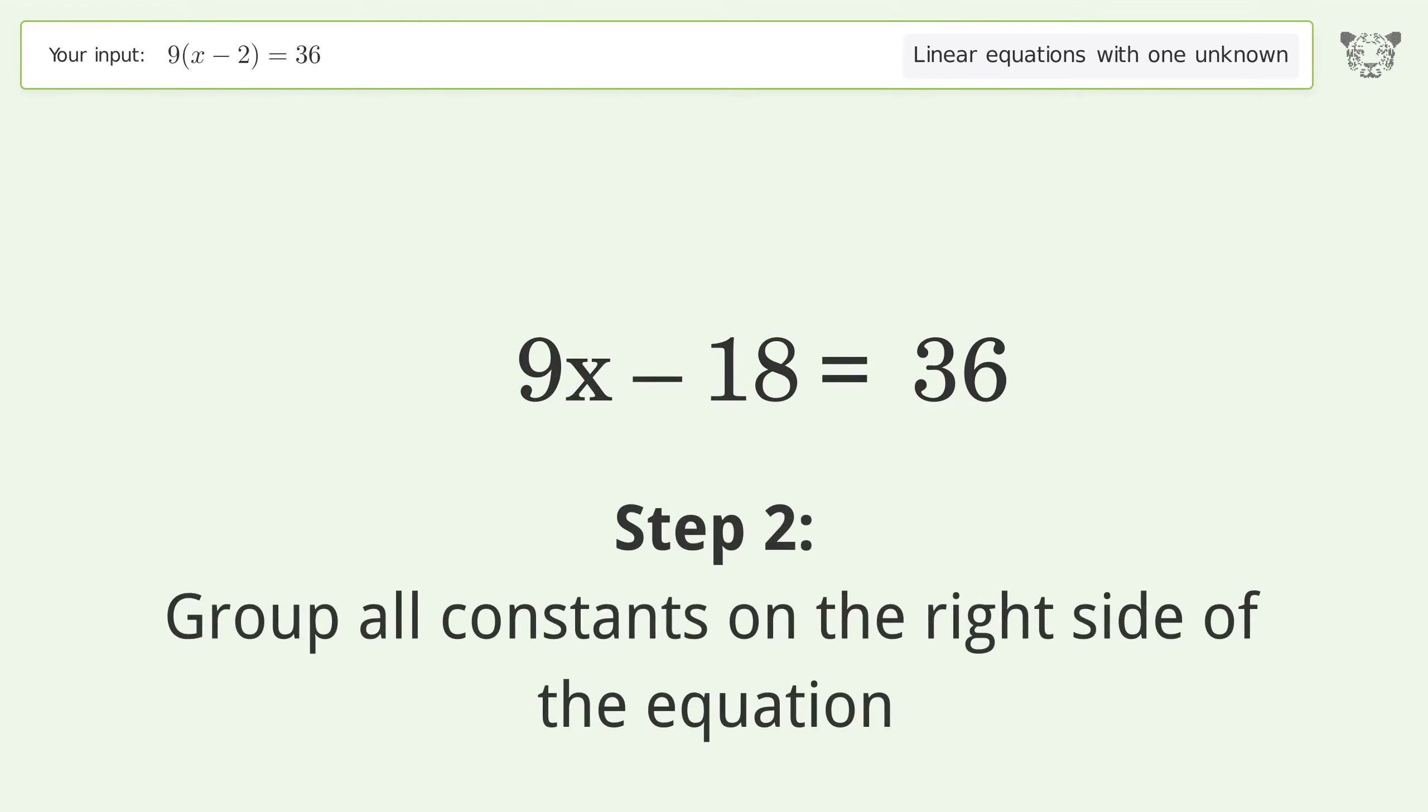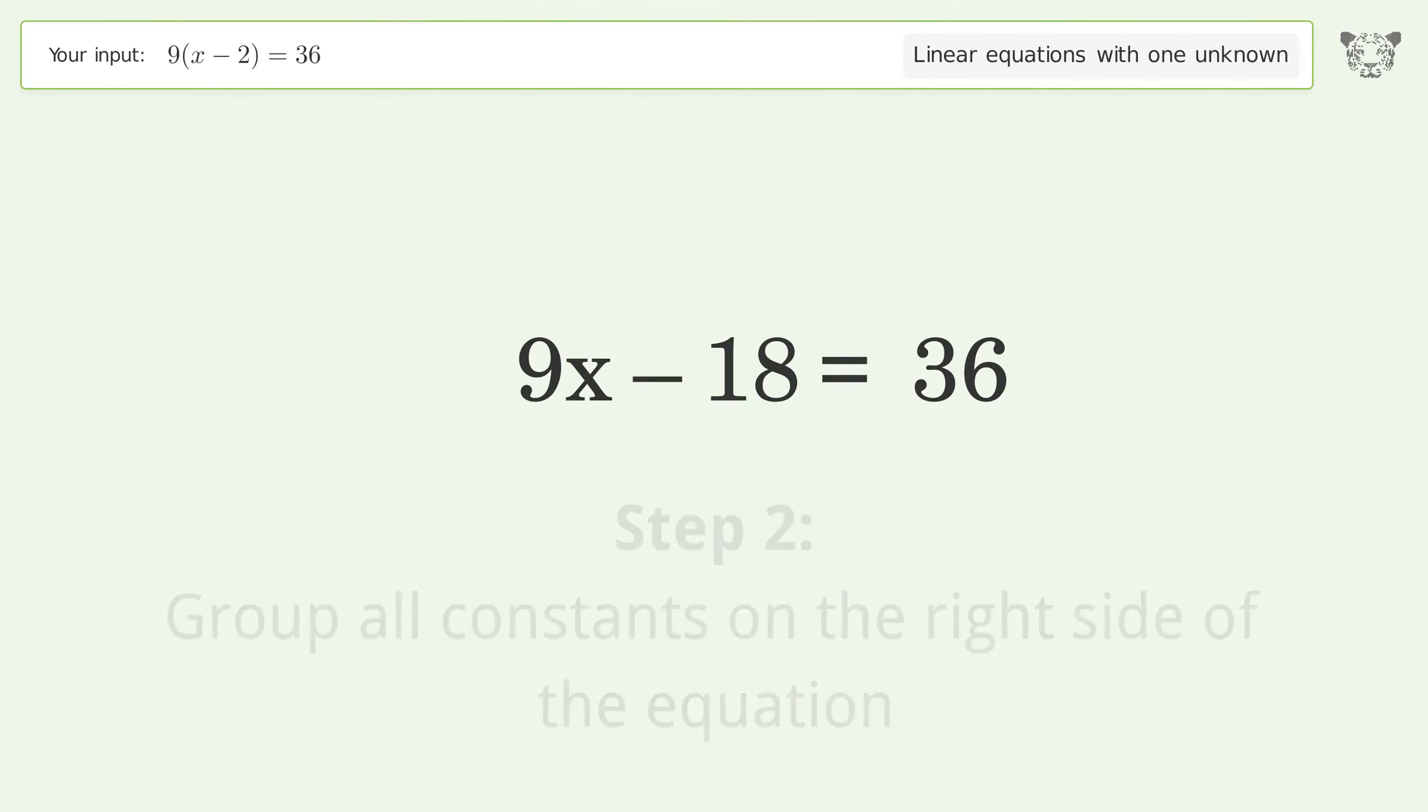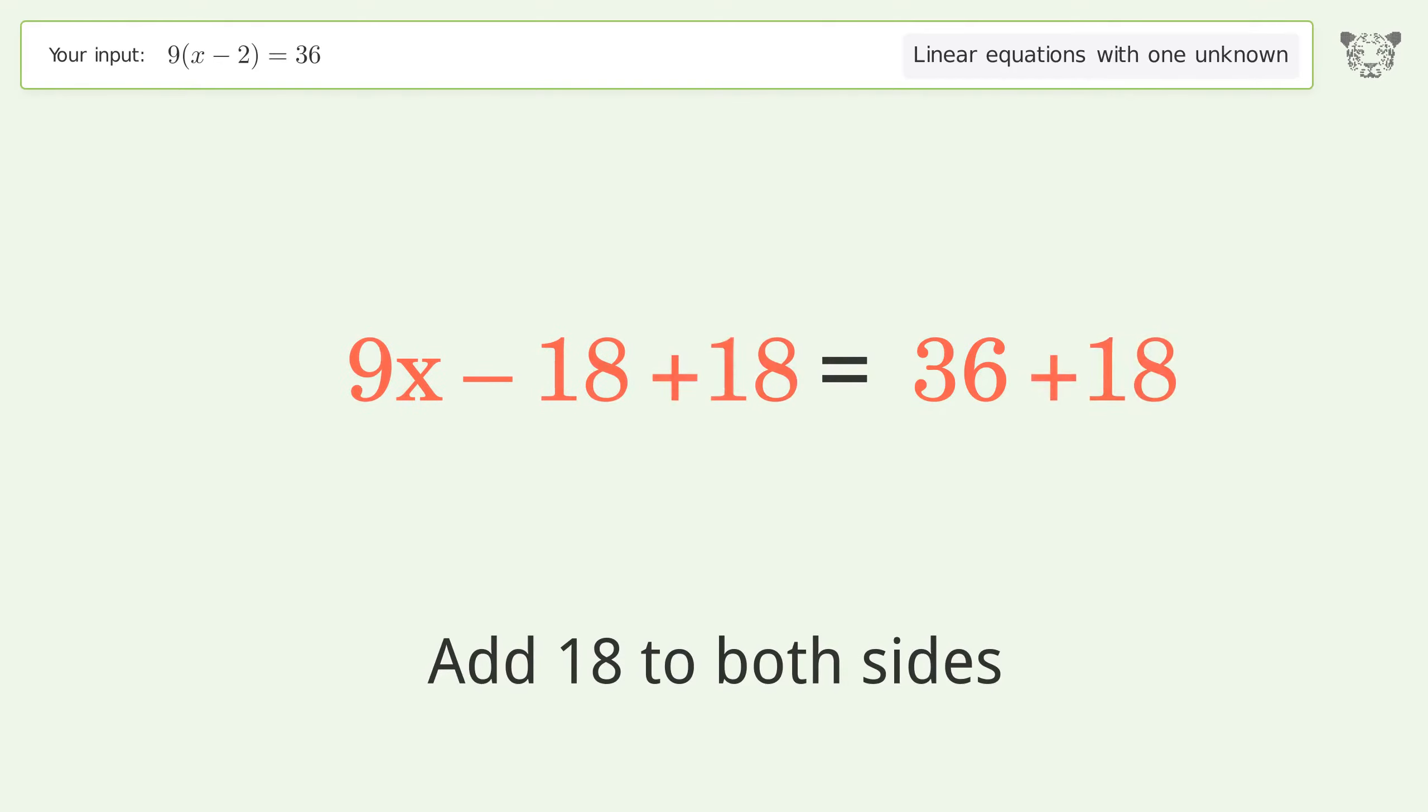Group all constants on the right side of the equation. Add 18 to both sides. Simplify the arithmetic.